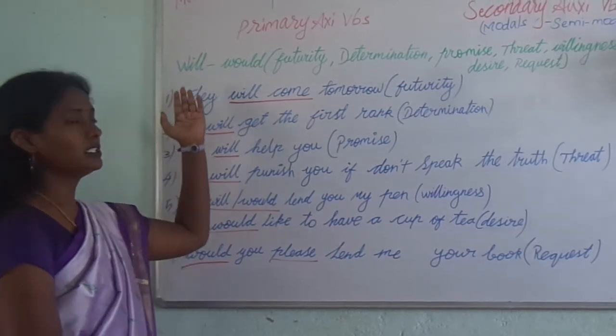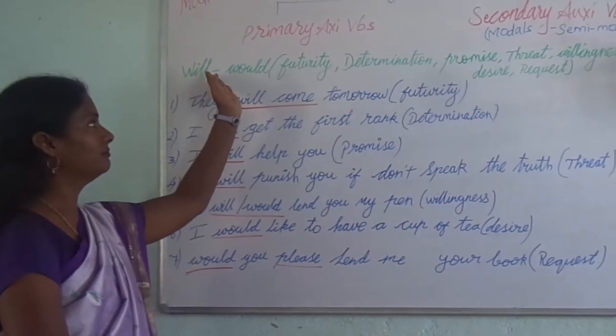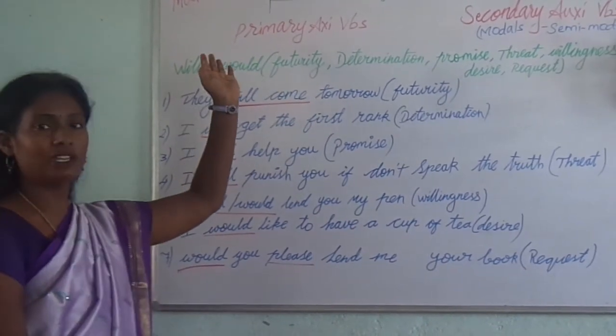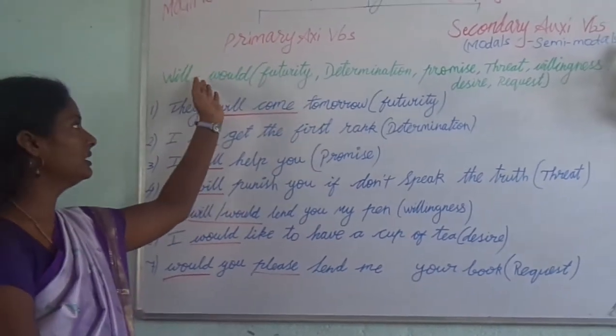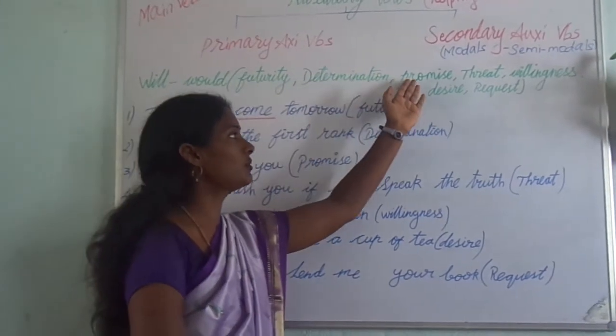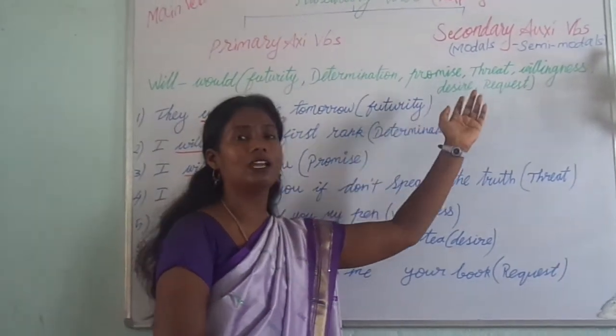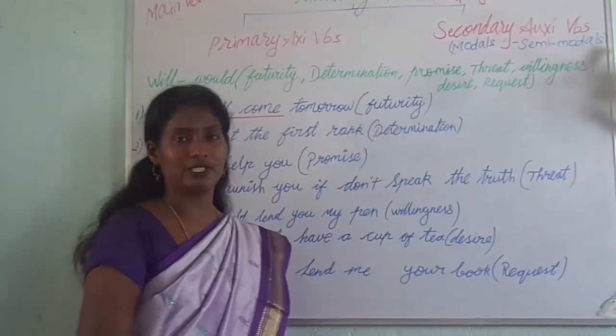So here we are seeing about will and would. The places where we can use will and would are: futurity, determination, promise, threat, willingness, desire, and request.